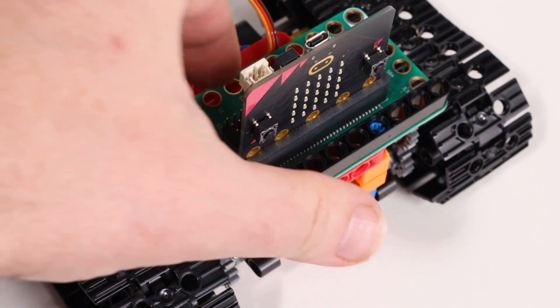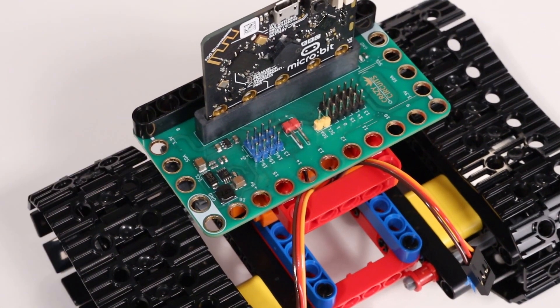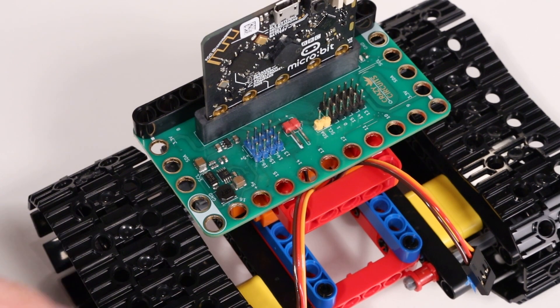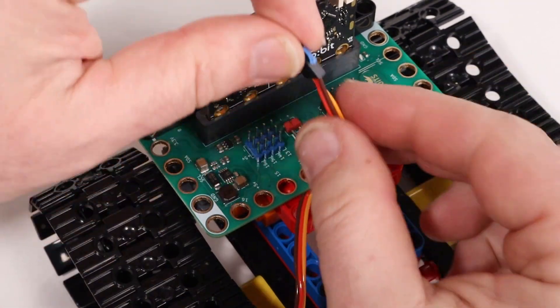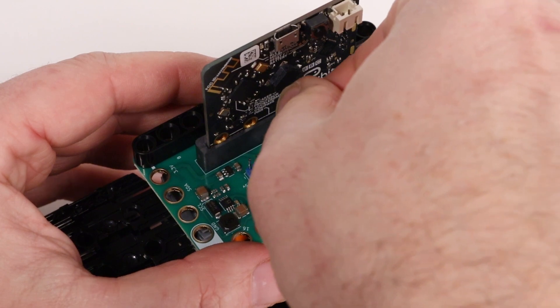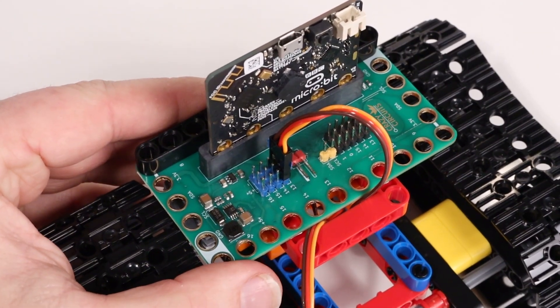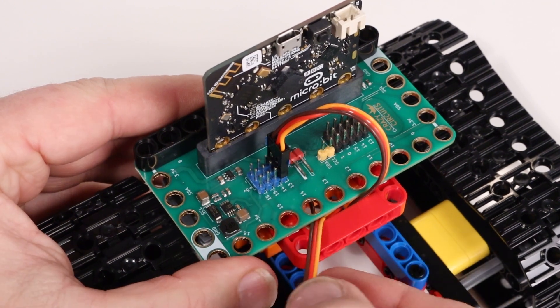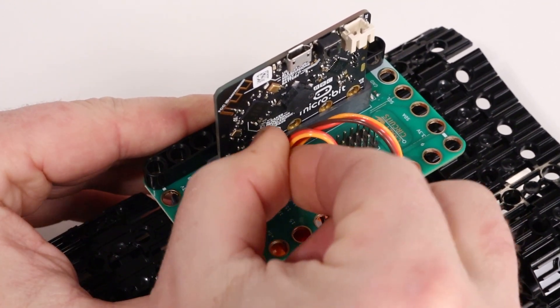Now we'll spin the tank around and work on connecting the servos. Remember that earlier we marked the left servo connector with a small piece of blue painter's tape. This makes it easy to identify. We're going to plug the left servo into the row for pin 13 in the blue high voltage header area. We should see the wires as orange, red, brown.